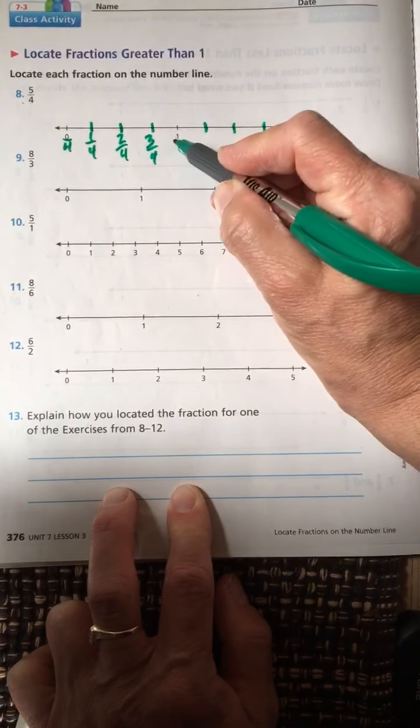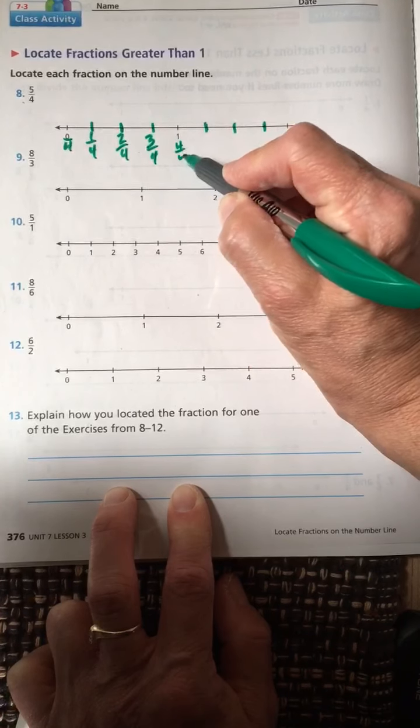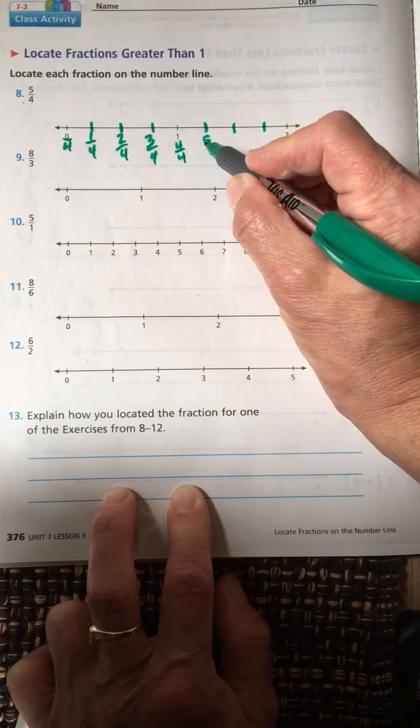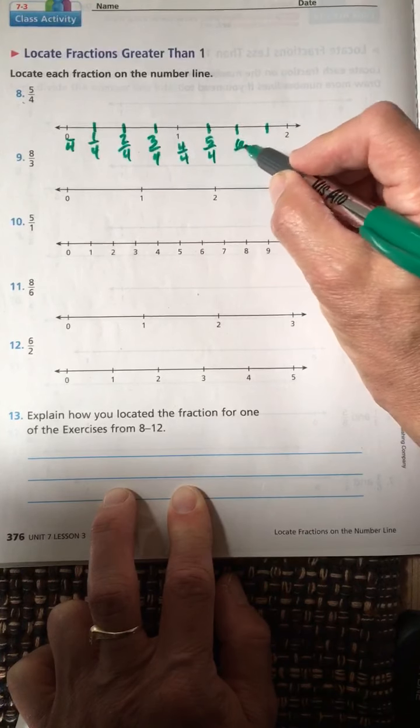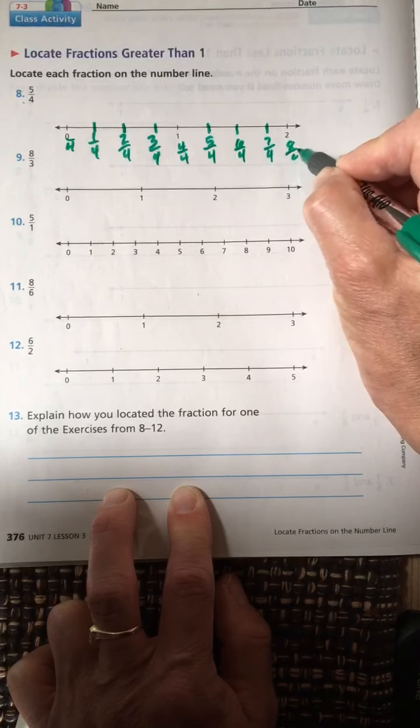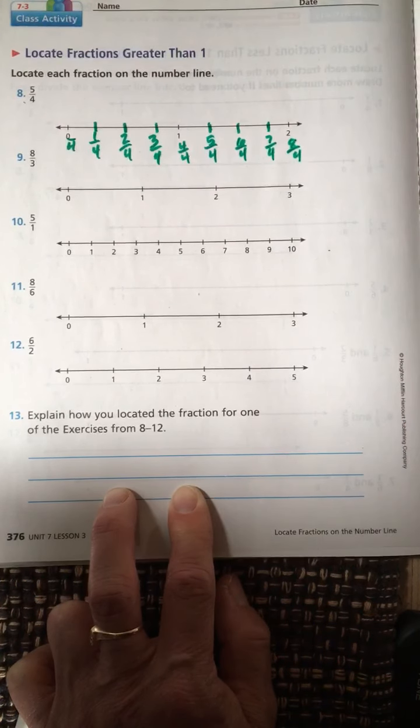And we're going to do improper fractions, more than one whole. So that's four fourths, one whole pizza. This is five fourths, six fourths, seven fourths, eight fourths. And label five fourths with a bubble.